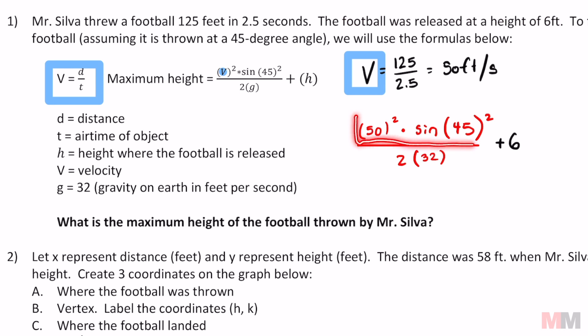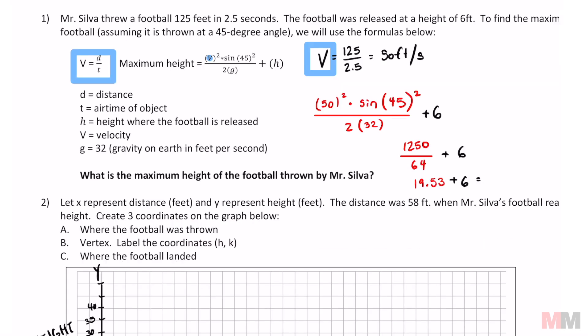If you put this numerator on the calculator that's going to equal 1250. And now do the denominator. 2 times 32 equals 64. And all we got to do is add 6 and we're good. Now that I have that, let's take the fraction 1250 over 64, which is 19.53. Add it to 6, and we will get the maximum height of the football thrown: 25.53. That is my final answer for that question.